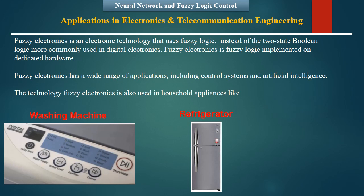ENTC and computer engineers can build their careers in contributing to the next generation of machine learning, where fuzzy logic and neural networks play a major role. Fuzzy logic is used to imitate human reasoning and cognition rather than strictly binary cases of truth, and includes intermediate degrees of truth between 0 and 1. It is well suited for regulating and controlling machine output according to multiple input variables, such as temperature control systems. Fuzzy electronics, implemented on dedicated hardware, has wide applications including control systems and artificial intelligence, and is also used in household applications like washing machines and refrigerators.